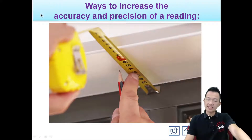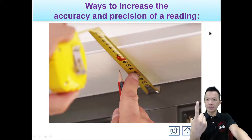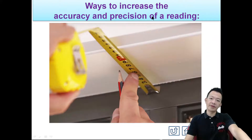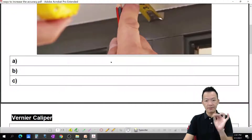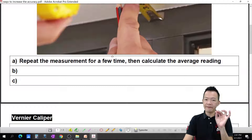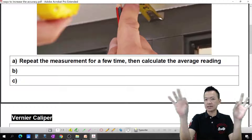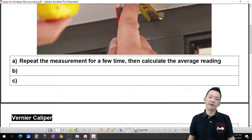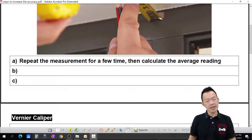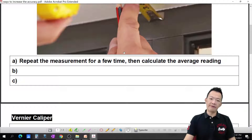And next: the ways to increase the accuracy and precision of a reading. When you make a measurement, you need accuracy and precision. How do you improve them? Method number one: repeat the measurement a few times, then calculate the average. Measure once, twice, three times, four times, average all the answers — it should be more accurate.